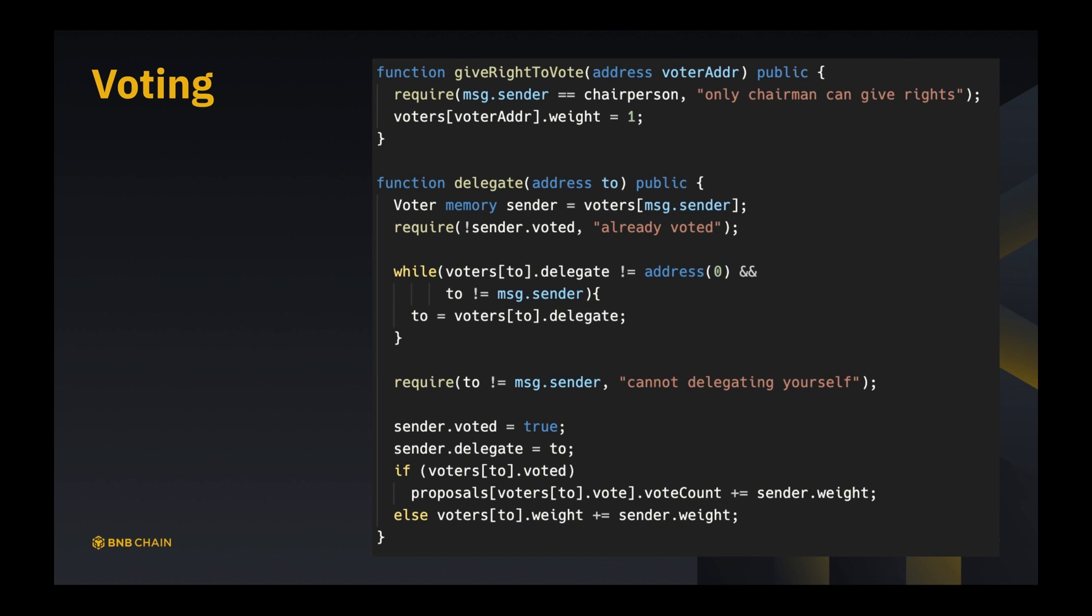In order to make sure it always terminates, then we require to is not message.sender. So that means if the while is ended because of to equals message.sender, we have a cycle and we say okay, you cannot delegate to yourself, you cannot form a cycle, you cannot mess up. The key point here is to report a problem if this thing happens. Otherwise, if we proceed, that means we didn't form a cycle and the while ends because voters[to].delegate is address zero. That means this person voters[to] does not have a delegate and he will be the person who really votes.